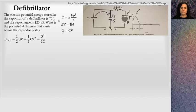So, let's read what's going on here. It says, the electric potential energy stored in the capacitor of a defibrillator is 75 joules. So electric potential energy, the energy stored is 75 joules. The capacitance is 125 microfarads. So I am going to write that down, 1.25 times 10 to the negative 6. What is the potential difference that exists across the capacitor plate? So I'm looking for voltage. So V equals what?